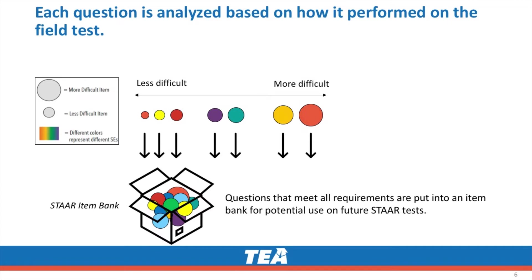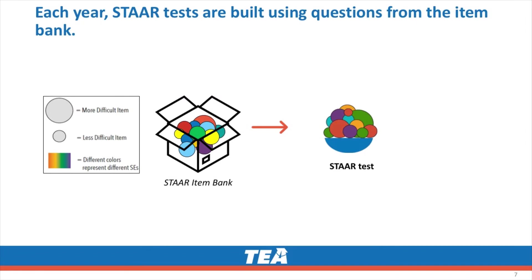Questions that meet all requirements are put back into an item bank for potential use on future STAR tests. Each year, STAR tests are built using questions from the item bank. Because we know the individual difficulty level of each question, we also know the difficulty level of the entire test.